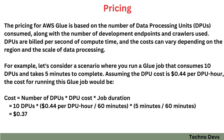Next is Pricing. The pricing for AWS Glue is based on the number of data processing units (DPUs) consumed, along with the number of development endpoints and crawlers used. DPUs are billed per second of compute time, and costs can vary depending on the region and the scale of data processing. For example, consider a scenario where you run a Glue job that consumes 10 DPUs and takes 5 minutes to complete. Assuming the DPU cost is 44 cents per DPU hour, the cost would be: Cost = Number of DPUs × DPU cost × job duration = 10 DPUs × (44 cents per DPU hour ÷ 60 minutes) × (5 minutes ÷ 60 minutes).